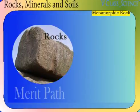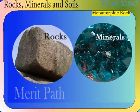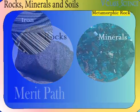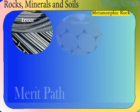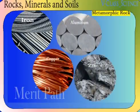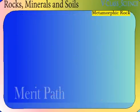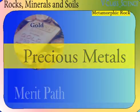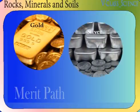Rocks and minerals are very useful as different metals like iron, aluminium, copper, zinc etc. are extracted from minerals. Whereas precious metals like gold and silver are obtained from rocks.